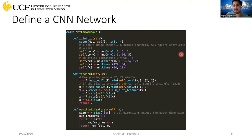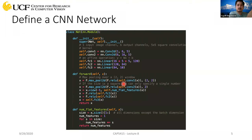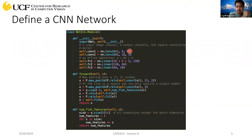Another question: in self.fc1, where does 5 × 5 come from? Let's say your input image has a resolution of 32 × 32. You are applying a 5 × 5 filter. With no padding (default zero) and stride of one, you can use the formula we discussed in the last class to compute the shape of the feature map after each convolutional layer.